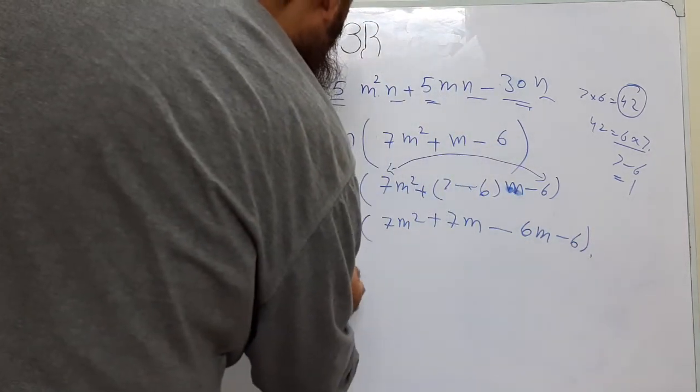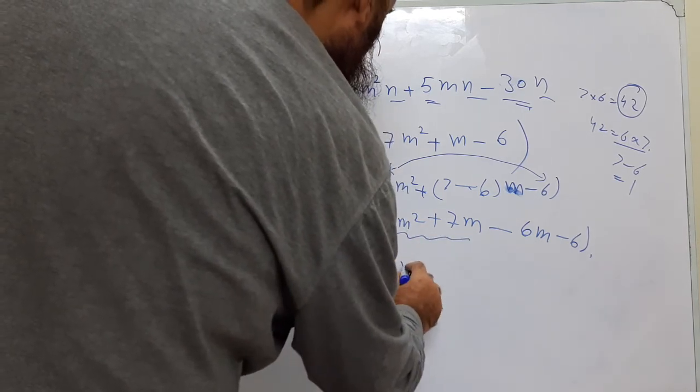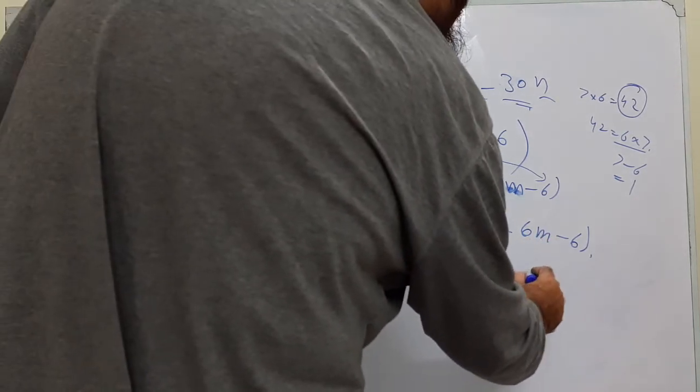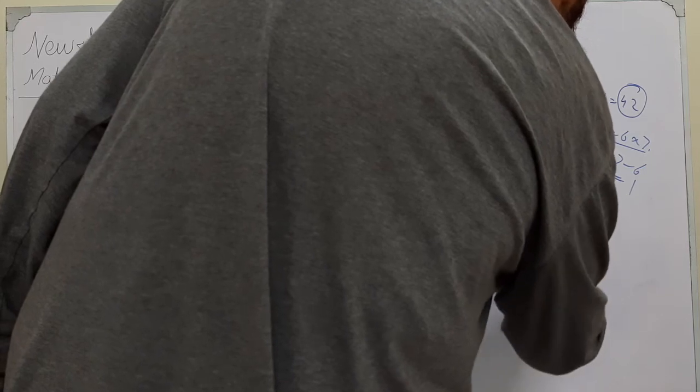Now we need to take the common. Here we can take 7M as common. It remains M plus 1. Here we can take minus 6 as common. So inside M plus. Because we have taken minus common, so it will be changed. M plus 1.